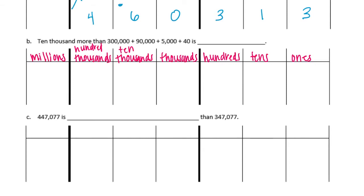We have 300,000, so I'll put a 3 in the hundred-thousands. 90,000, so there's 9 ten-thousands. 5,000s. Nothing in the hundreds, 40 — so 4 groups of 10 — and no ones.